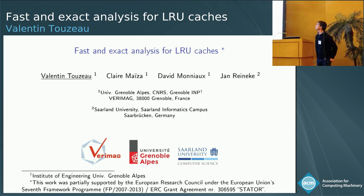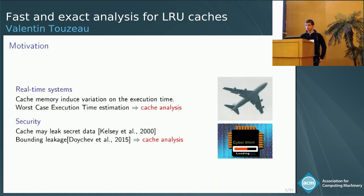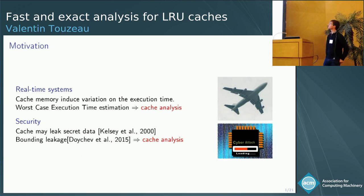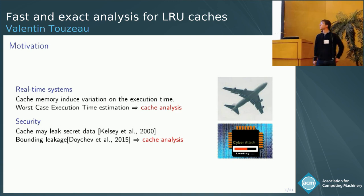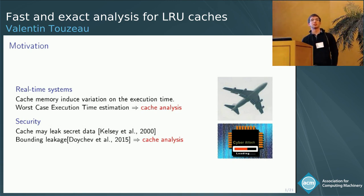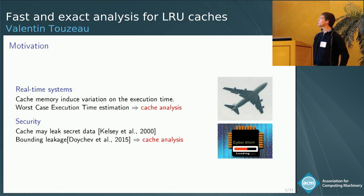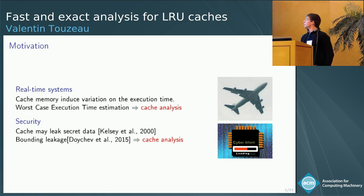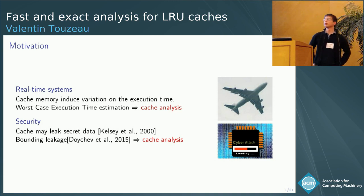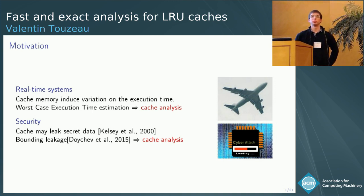I will talk about cache analysis. Why would one need to perform cache analysis? Here are two examples. The first is for real-time systems: in addition to being logically correct, these systems need to ensure they meet their deadlines, and because caches have an impact on execution time, you need cache analysis to retrieve precise bounds. Another example is for security — an attacker can retrieve secret data by targeting caches, and some approaches use cache analysis to bound the information leakage.